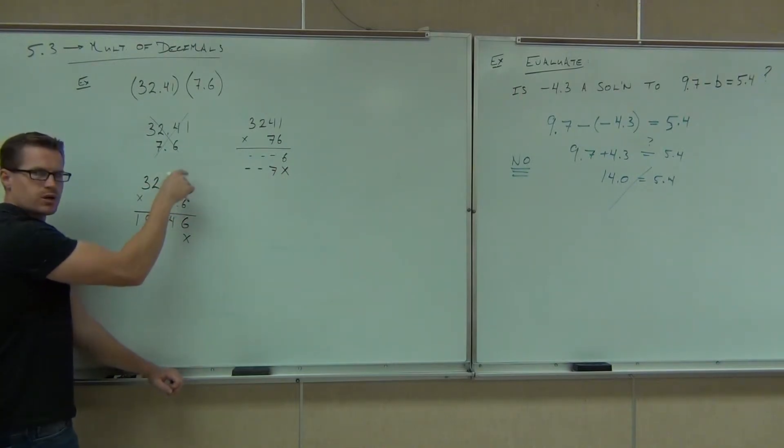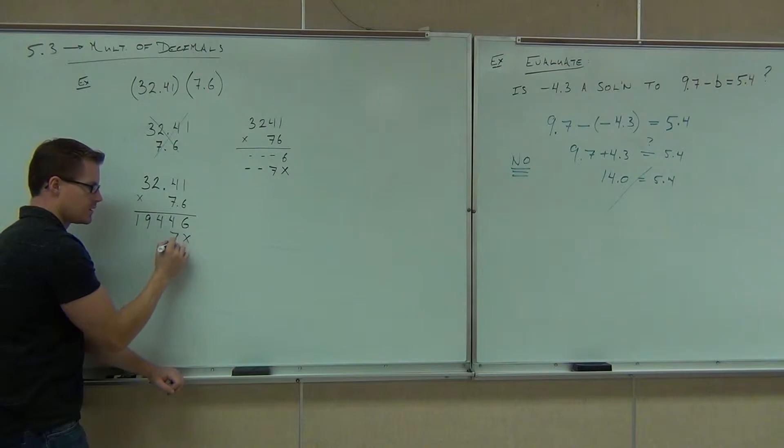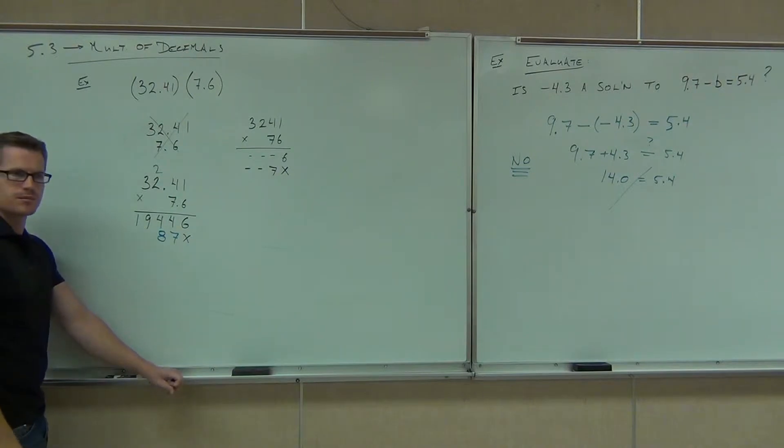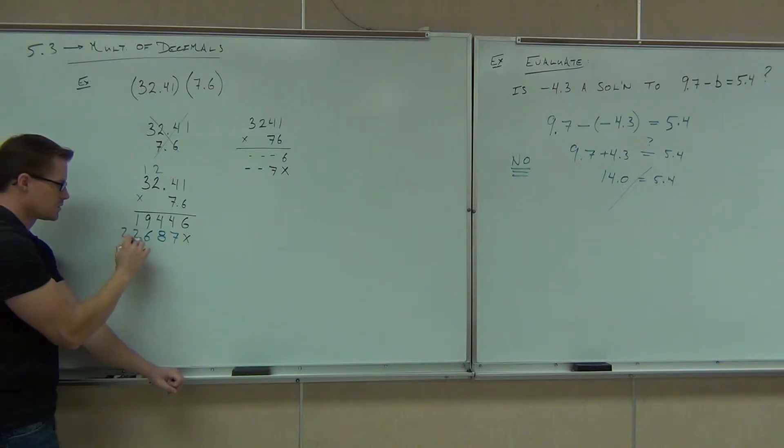And we'll do the same exact operation with our 7 times each of those digits in the first number. The first digit is going to give us what? 7. Everybody. Then what? 28. That wasn't everybody. Come on. And then what? 16. 16. We'll carry the 1. And lastly, we'll get how much?